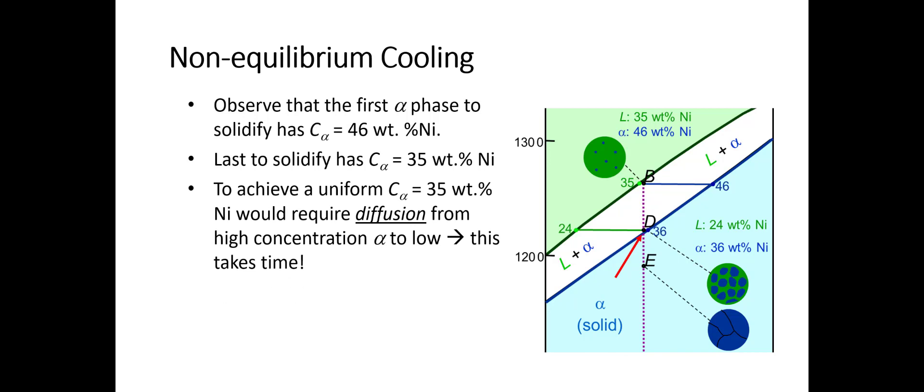The only way we can achieve a uniform 35 weight percent nickel composition, which is what we need at this point here inside the solid phase, is to have diffusion from the high concentration alpha that was formed at this time to the low. This takes time. As a result, this doesn't typically happen in real systems because we can't cool it that slow. We're usually trying to achieve other things by cooling a little bit more rapidly than what would be required for equilibrium cooling.